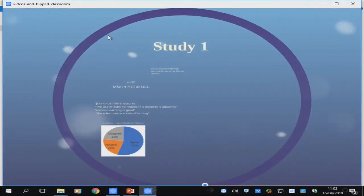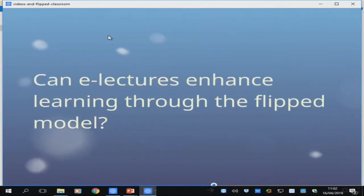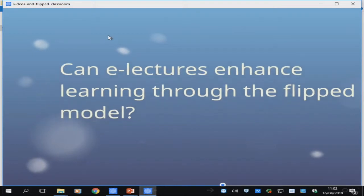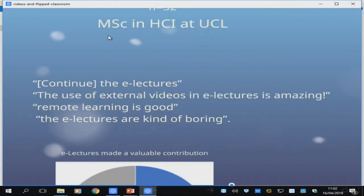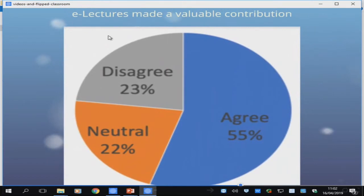Two studies we conducted. The first study was with some post-graduates. We looked at this question: can e-lectures enhance learning through the use of the flipped model? We had 32 students doing a post-graduate master's course in HCI at UCL. And we used this model. And then at the end, we gave them a feedback survey. And these are some of the things they said. They wanted us to continue the e-lectures. The use of the external videos in the e-lectures is amazing. Remote learning is good. They're talking about this kind of flexible distance learning. Not all positive. The e-lectures are kind of boring, said one person. That's the kind of qualitative feedback. Here's some statistics. 55% thought that the e-lectures made a valuable contribution. That's 77% if you include neutrality.